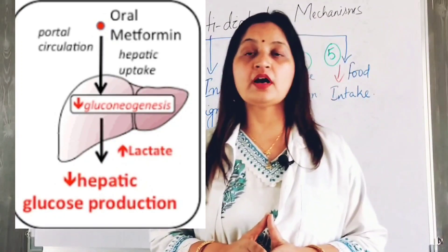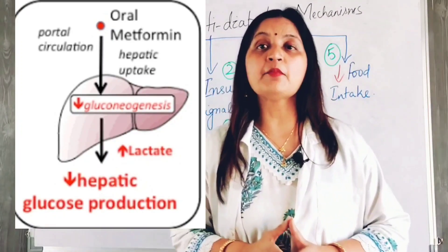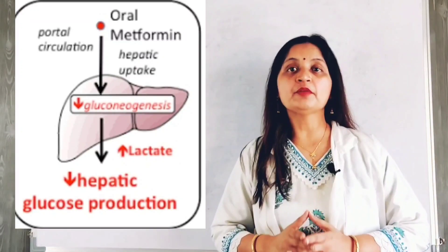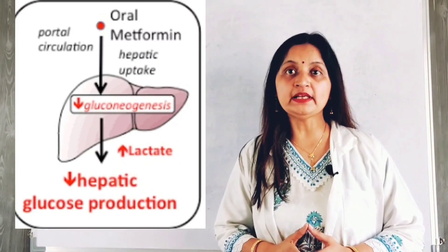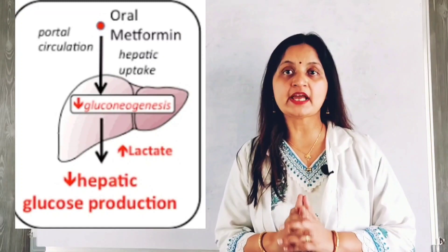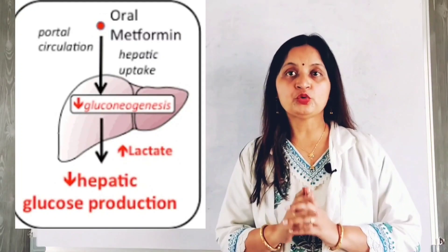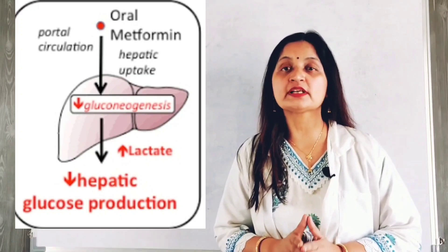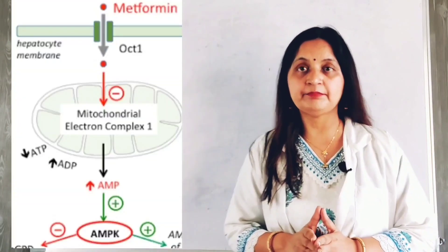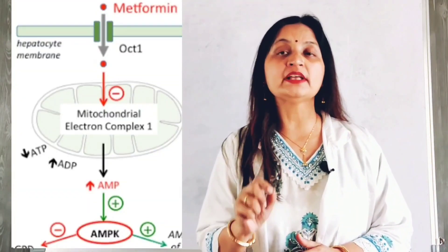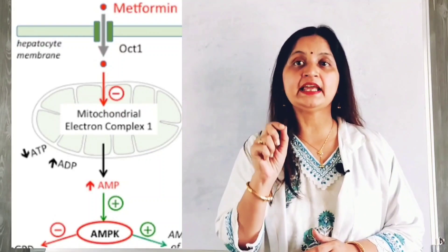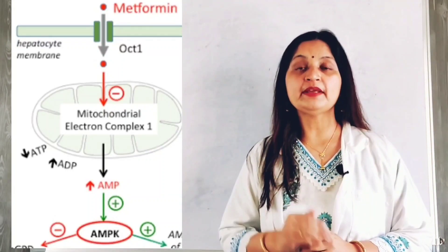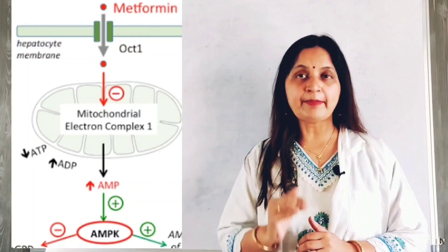Now let's see how metformin works at the molecular level. When taken orally, metformin is absorbed into the hepatocyte from the portal vein through organic cation transporters expressed in the hepatocyte membrane. These transporters facilitate the uptake of metformin into the cells.